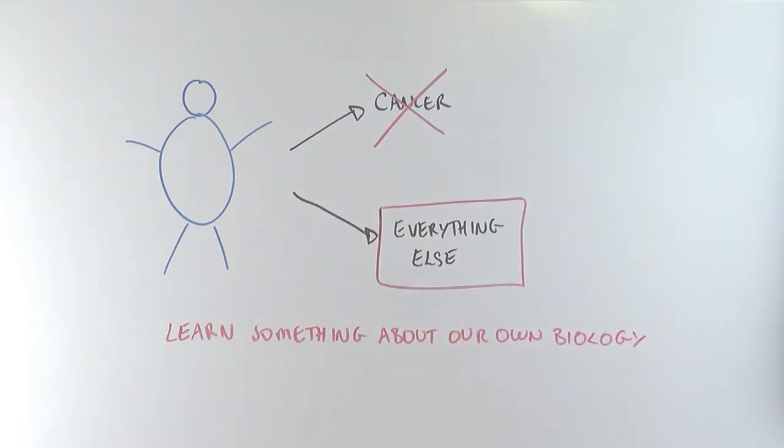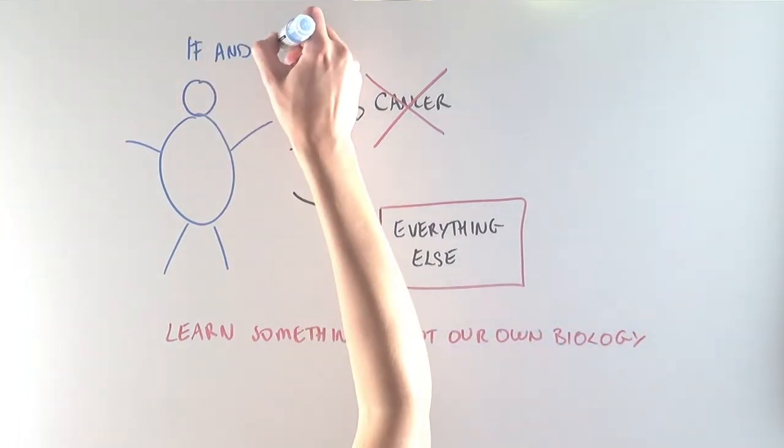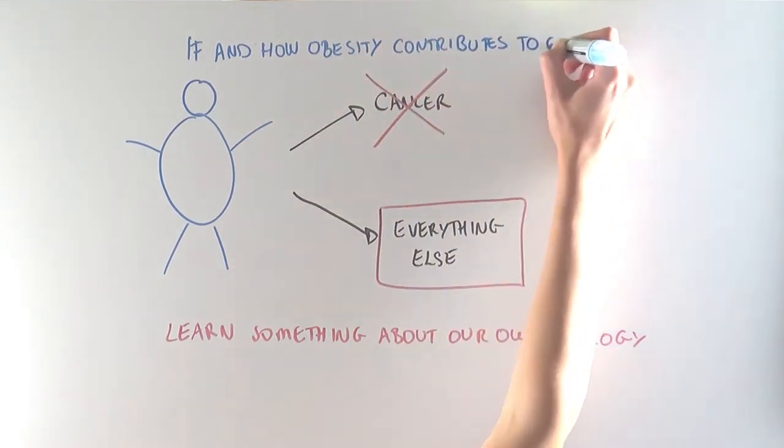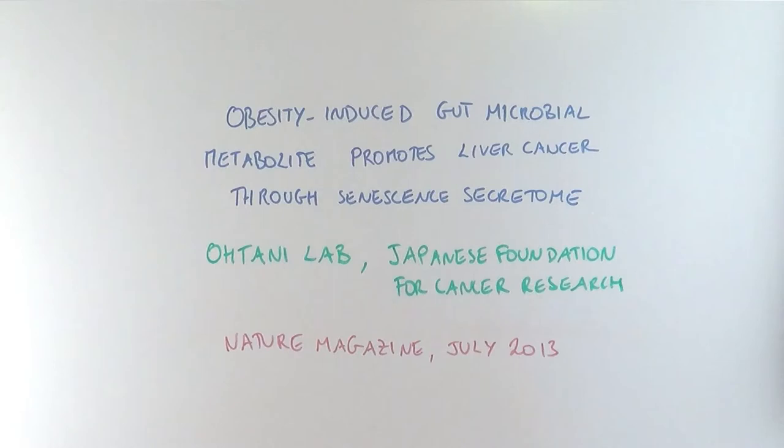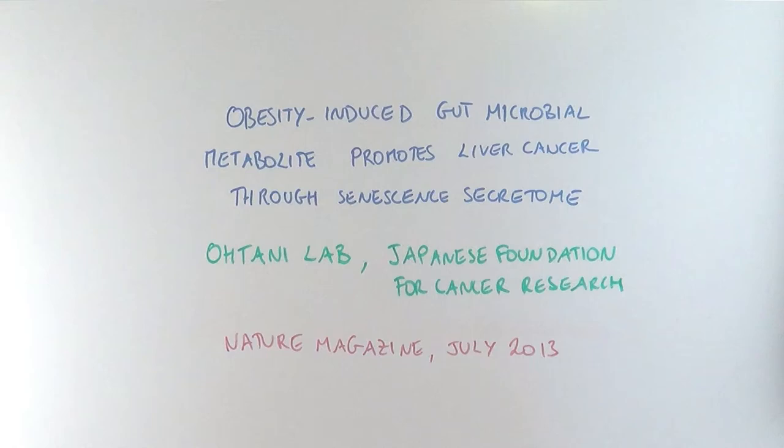The scientists of this paper wanted to understand if and how obesity contributes to cancer. Their findings are published in their article titled Obesity-Induced Gut Microbial Metabolite Promotes Liver Cancer Through Senescent Secretome, published in Nature in July 2013 by the Otani Lab at the Japanese Foundation for Cancer Research.